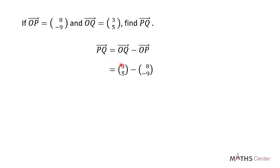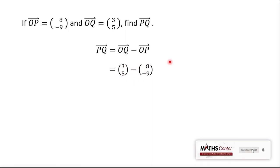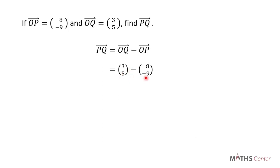When we do that, we are going to have (3, 5) minus (8, -9). 3 minus 8 will give us -5, and 5 minus -9 will give us 14.